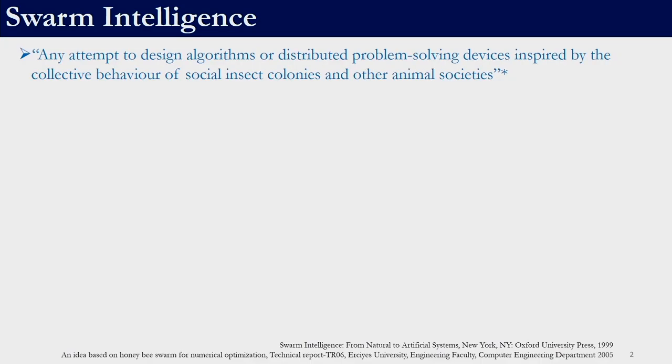Welcome to this session. In this session we will be looking at the Artificial Bee Colony Algorithm. Artificial Bee Colony Algorithm is a meta-heuristic algorithm which was proposed by Karaboga in 2005. It is a swarm intelligence algorithm. Swarm intelligence has been formally defined as any attempt to design algorithms or distributed problem-solving devices inspired by the behavior of social insect colonies or other animal societies. One other swarm intelligence algorithm we have seen is particle swarm optimization.